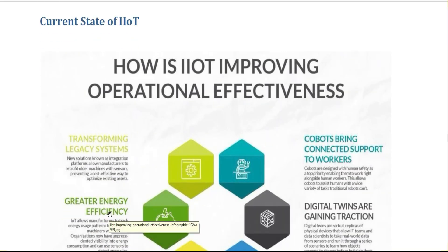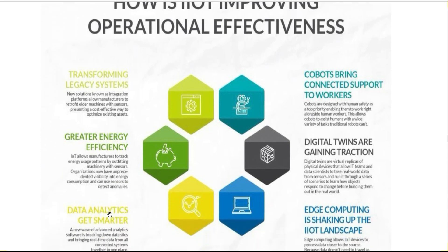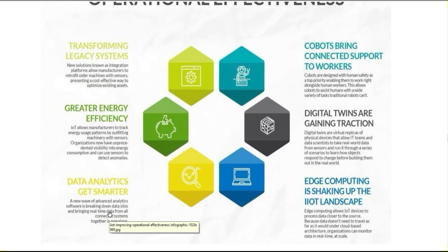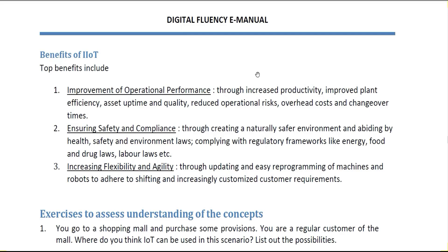Current state of IIoT: there are six stages showing how IIoT is improving operational effectiveness — transforming legacy systems, greater energy efficiency, smarter data analytics, cobots bringing connected support to workers, digital twins gaining traction, and edge computing shaking up the IIoT landscape.